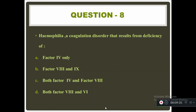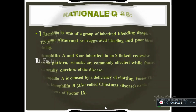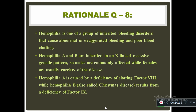Question eight: hemophilia is a coagulation disorder that results from deficiency of — factor 4 only, factor 8 and 9, both factor 4 and 8, or both factor 8 and 6? The answer is factor 8 and 9. Hemophilia is a bleeding disorder due to the absence of factor 8 and/or factor 9. There are three types: hemophilia A is related to absence of factor 8, hemophilia B (also called Christmas disease) involves absence of factor 9, and hemophilia C involves absence of factor 11.